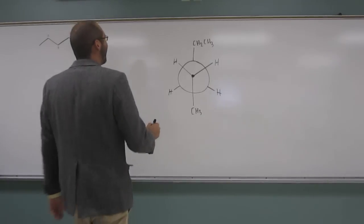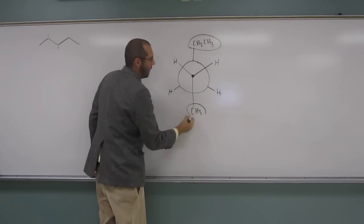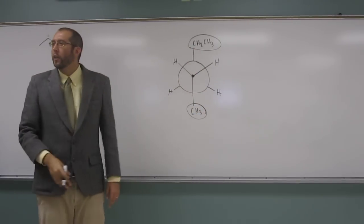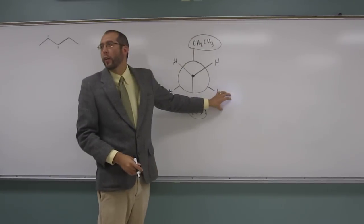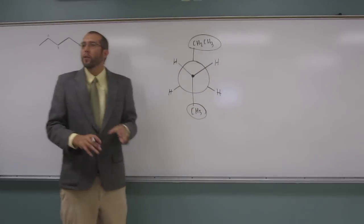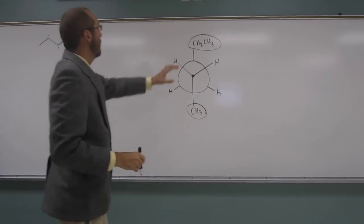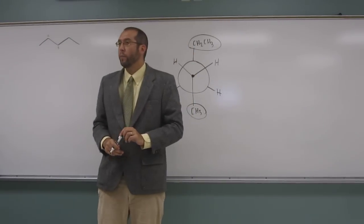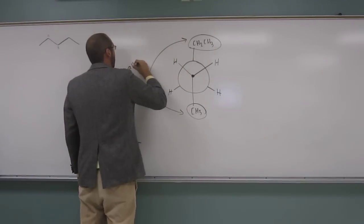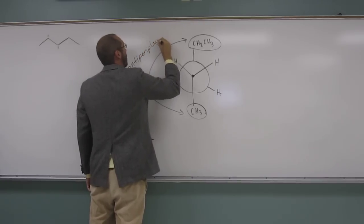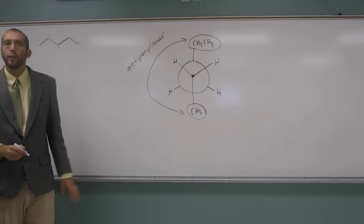So what we have here is that the big groups, an ethyl group and a methyl group, in relation to all the other groups on each of those carbons, those are the big groups. An ethyl group is bigger than a hydrogen and bigger than a hydrogen. A methyl group is bigger than a hydrogen and a hydrogen. So when we have the two big groups, the two big alkyl groups on opposite sides, like 180 degrees away from each other, we call that anti-periplanar. So we have this in an anti-periplanar arrangement.